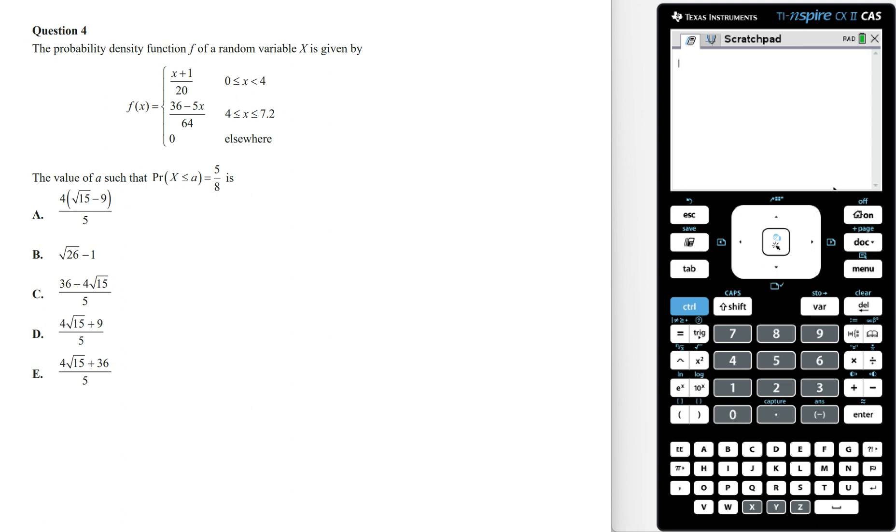The probability that x is less than or equal to a equals 5 on 8 means that the area under the graph of f of x from where x is equal to 0 to where x is equal to a is going to equal 5 on 8.